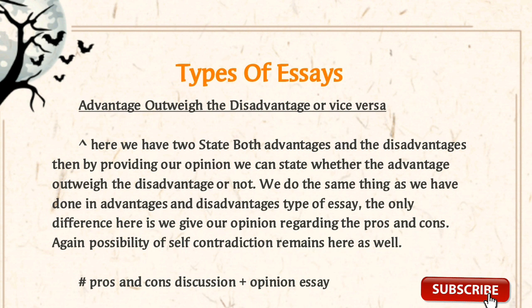In the subcategory of advantage and disadvantage essays — 'do you think the advantages outweigh the disadvantages?' — you state both advantages and disadvantages and then provide your opinion on whether advantages outnumber or outweigh the disadvantages. The only difference from the basic type is that you give your opinion regarding the pros and cons. Again, there are chances of self-contradiction in this kind of essay.